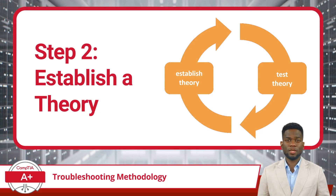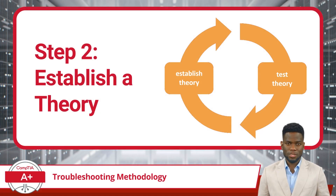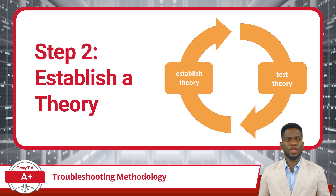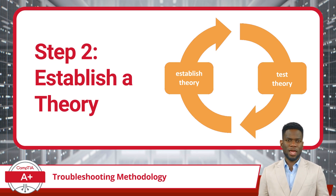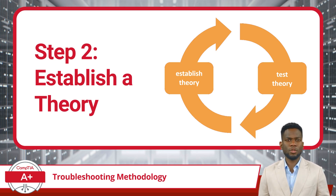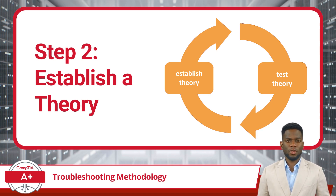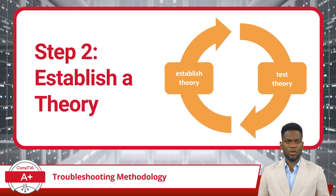Step 2 in CompTIA's troubleshooting process is to establish a theory of probable cause. This step is closely related to Step 3, which is to test the theory to determine the cause. These two steps may be repeated as many times as necessary, as sometimes our initial theory is wrong. If at first you don't succeed, try again.